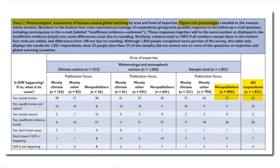Climate alarmists want you to believe this is a scientific issue, not a political one. In 2013, President Obama tweeted that 97% of the world's scientists agree we're in a climate crisis. That same year, the American Meteorological Society took a survey of their professional members, asking: is global warming happening, and if so, what is its cause? Only 52% of all professional members agreed it was mostly human-caused, and only 37% of professional forecasters agreed. They were not asked whether global warming was dangerous or if we're in a crisis — they probably would have been laughed at had they asked such a ridiculous question.